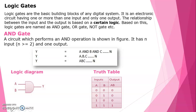Logic gates are the basic building blocks of any digital system. They are electronic circuits having one or more than one input and only one output. The relationship between input and output is based upon certain logic. There are three main gates: the AND gate, OR gate, and NOT gate.